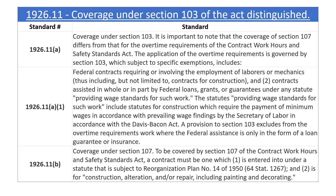1926.11 Coverage under Section 103 of the Act Distinguished: It is important to note that the coverage of Section 107 differs from that for the overtime requirements of the Contract Work Hours and Safety Standards Act. The application of the overtime requirements is governed by Section 103, which, subject to specific exemptions, includes: (1) federal contracts requiring or involving the employment of laborers or mechanics, thus including but not limited to contracts for construction; and (2) contracts assisted in whole or in part by federal loans, grants, or guarantees under any statute providing wage standards for such work.